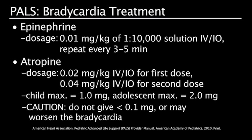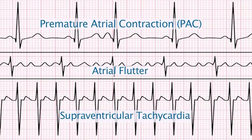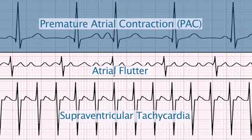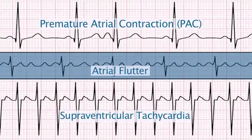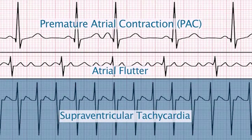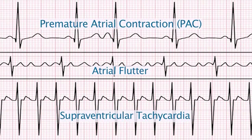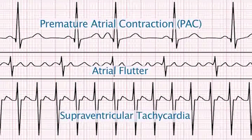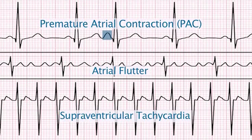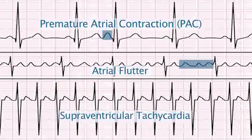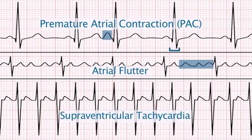Caution: do not give less than 0.01 mg of atropine, as it may worsen the bradycardia. The rhythms originating in the atrium, other than the sinoatrial node, are premature atrial contraction, atrial flutter, and supraventricular tachycardia. Characteristics of atrial arrhythmias are: P waves are of unusual shape, there is an abnormal number of P waves for each QRS complex, and the QRS complexes are of normal duration.